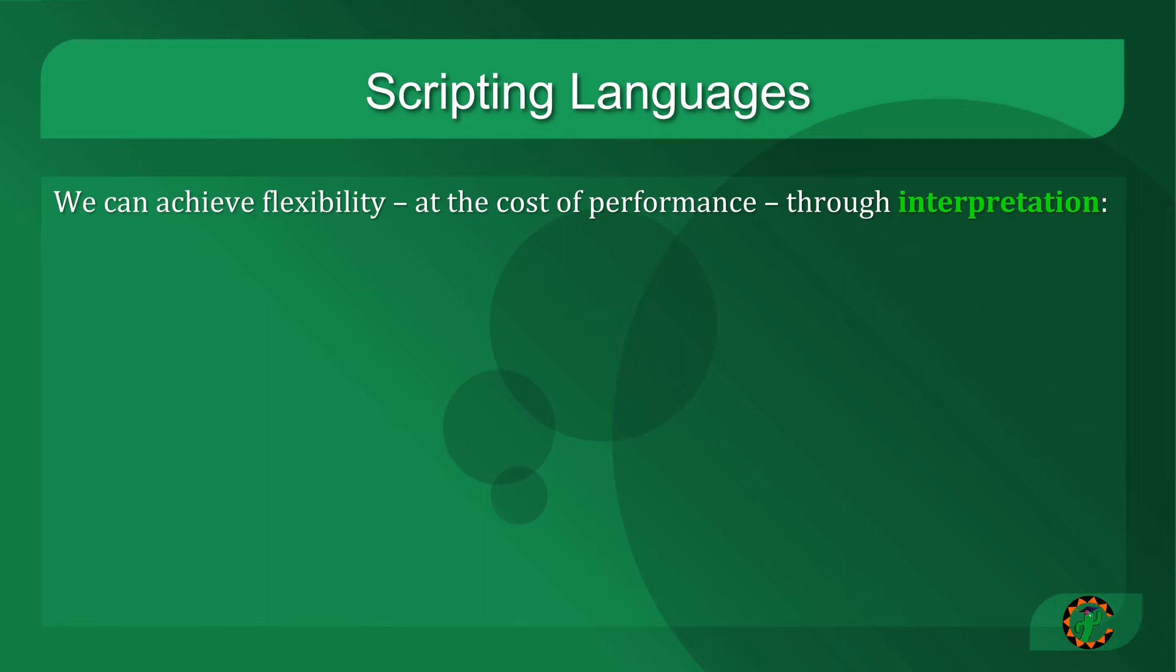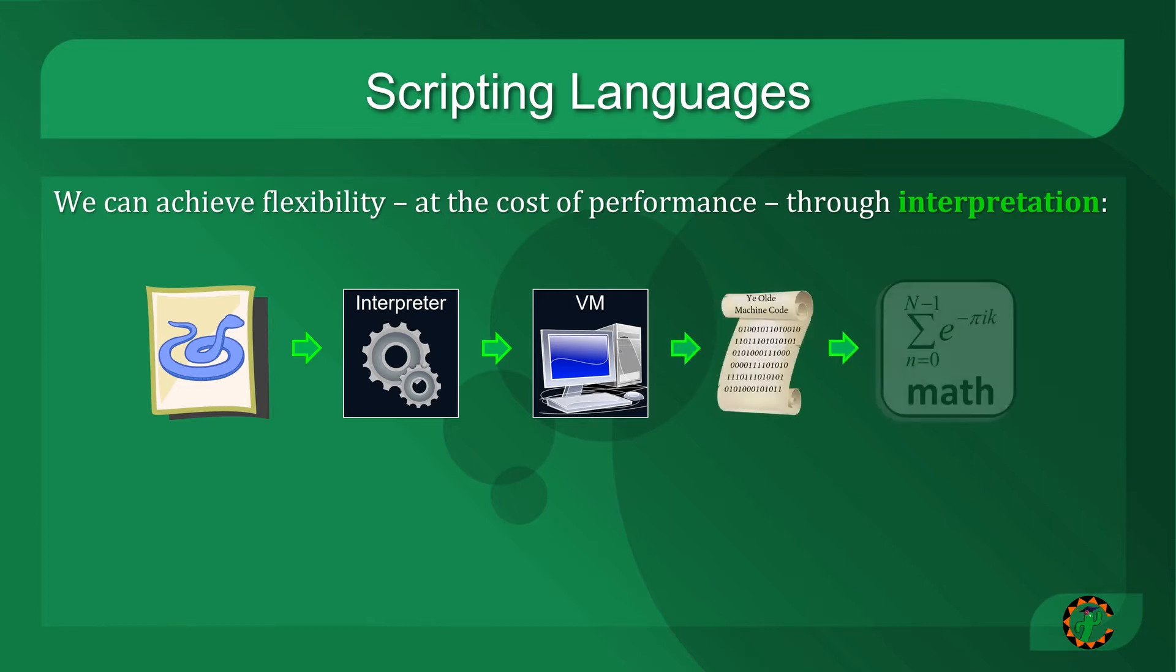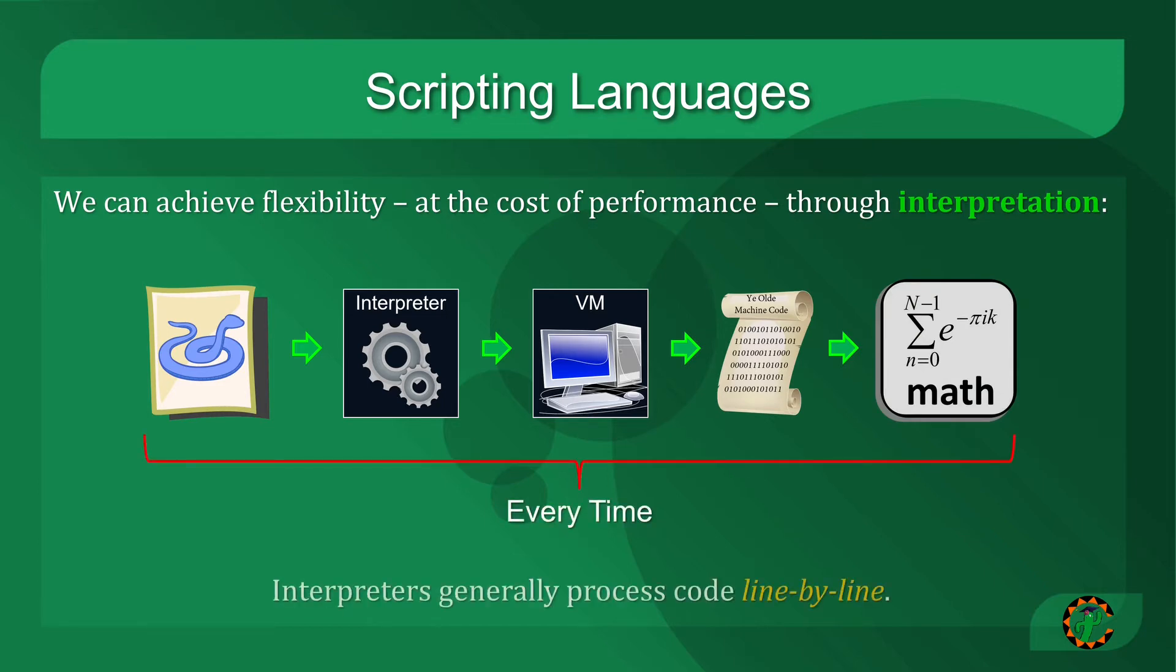On the other side of the programming spectrum, we have what we refer to as scripting languages. Scripting languages give us a certain degree of flexibility, and that flexibility comes at the cost of performance through an approach known as interpretation. The way an interpreted script program works, for example if we have a Python program, is that we run that script on an interpreter. The interpreter runs a virtual machine, a machine that understands the native scripting language, and that virtual machine operates by executing individual machine code instructions as a program on the CPU. Additionally, while systems languages are generally converted entirely into machine code, interpreters process instructions line by line, one instruction at a time.